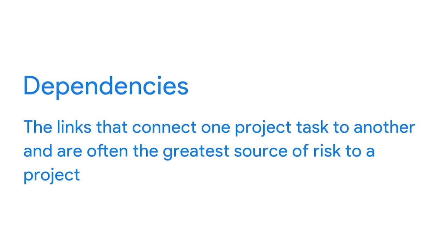We've covered risks and how they affect a project, but we haven't fully discussed dependencies — arguably one of the biggest factors in a project. Dependencies are the links that connect one project task to another, and they're often the greatest source of risk to a project. Two or more project tasks may have a relationship where the completion of one task is reliant on the initiation of another, and vice versa. Think of these tasks like a line of dominoes — if one domino falls, it'll knock the next one over, and so on.